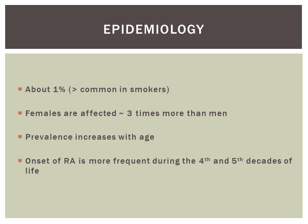The epidemiology. Rheumatoid arthritis affects approximately 1% of the population. It is more common in smokers. Females are affected about 3 times as often as men. Rheumatoid arthritis will show itself more frequently with increased age, and as such, the onset is usually between the 4th and 5th decades of life.